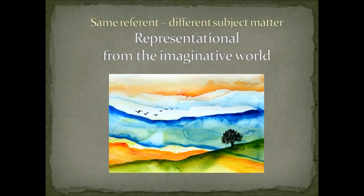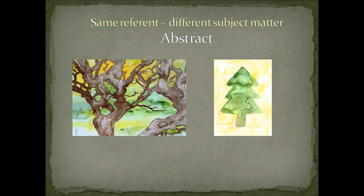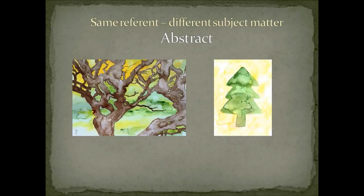Artists use abstraction to manipulate the referent by exaggerating features, deleting or minimizing details, or changing the form in some way. This can be used in a very subtle way, or abstraction can be quite radical, so that the entire artwork becomes highly abstracted. The tree image on the left does not have realistic details of the tree in the background — I used abstraction to modify the referent. The tree image on the right has been abstracted to such an extent that it is really just more of a symbol of a tree.